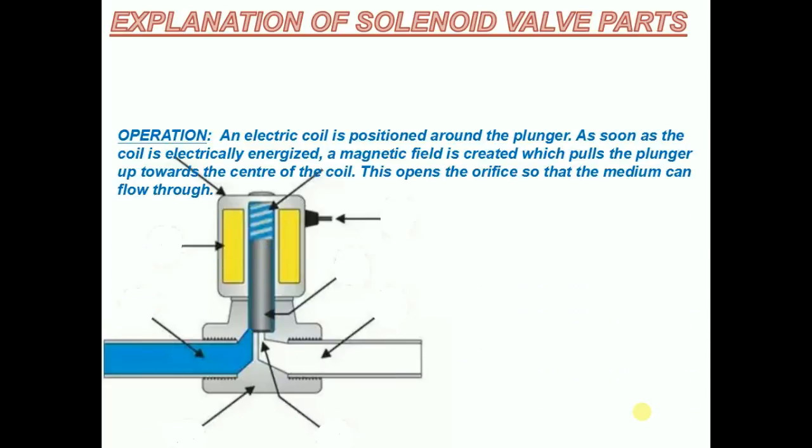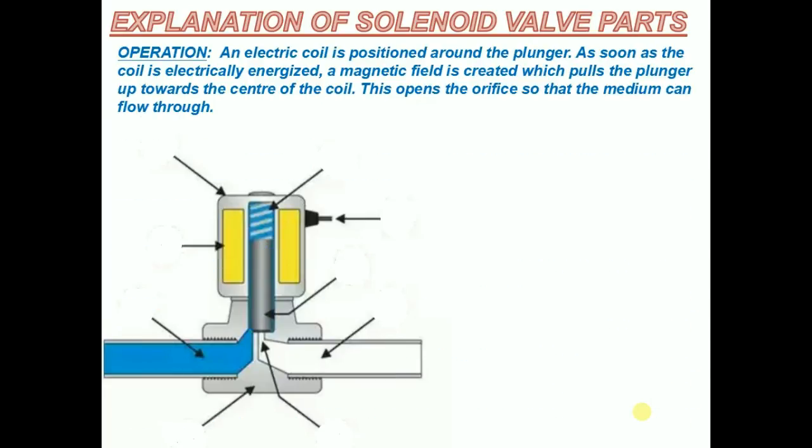An electric coil is positioned around the plunger. As soon as the coil is electrically energized, a magnetic field is created which pulls the plunger up towards the center of the coil. This opens the orifice so that the medium can flow through.